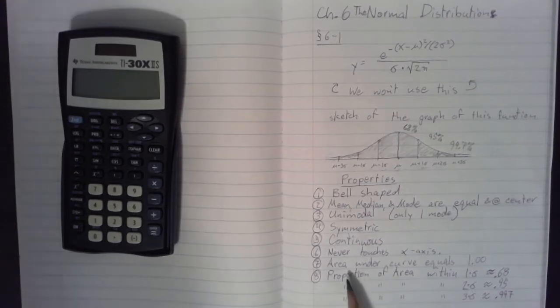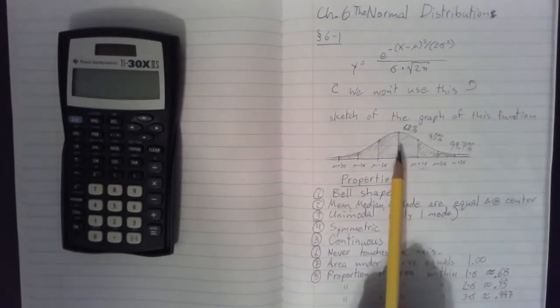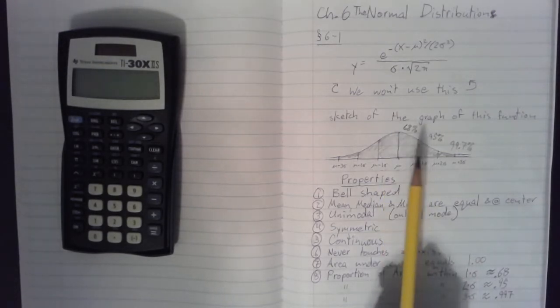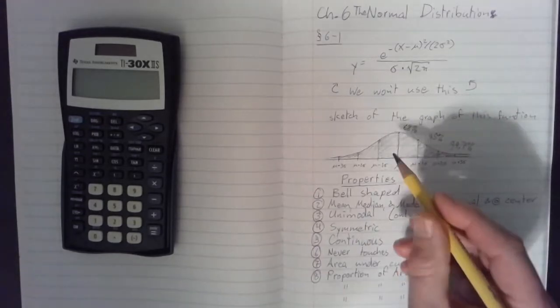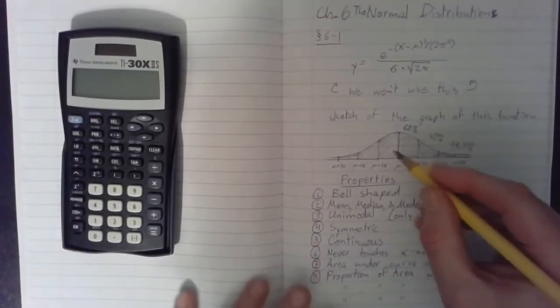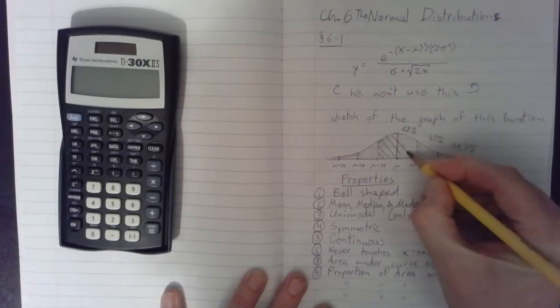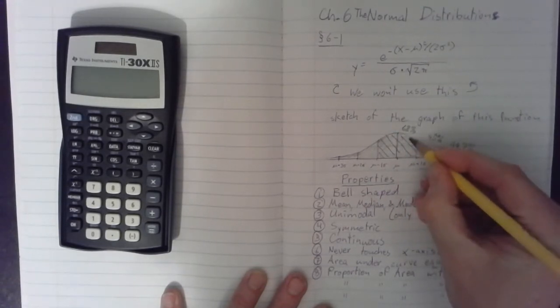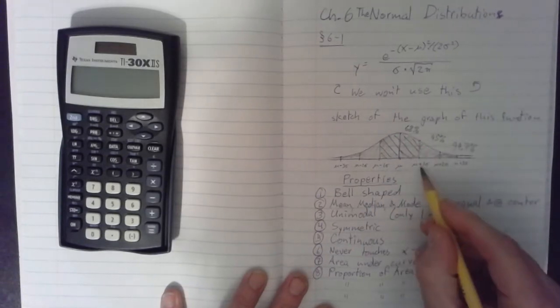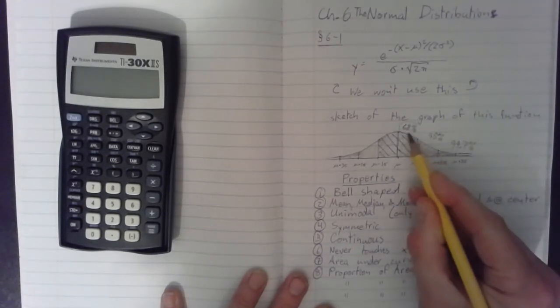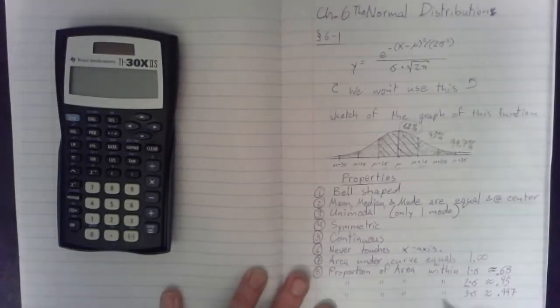So, we remember this, that the proportion of the area within one times sigma, that's what that says there, is approximately equal to 0.68. Or, in other words, 68% of the area underneath this curve is in this range from mu minus one copy of sigma all the way up to mu plus one copy of sigma. So, that is 68% of the area.